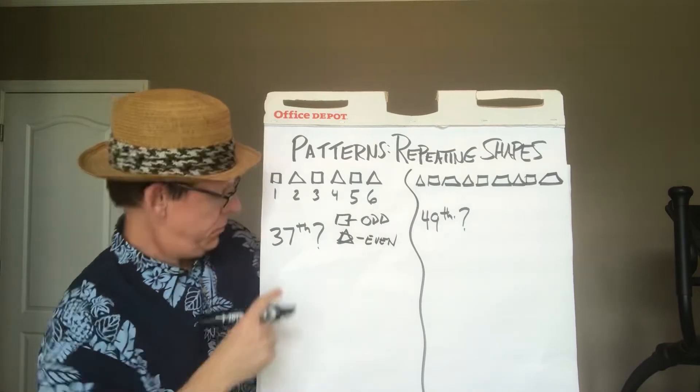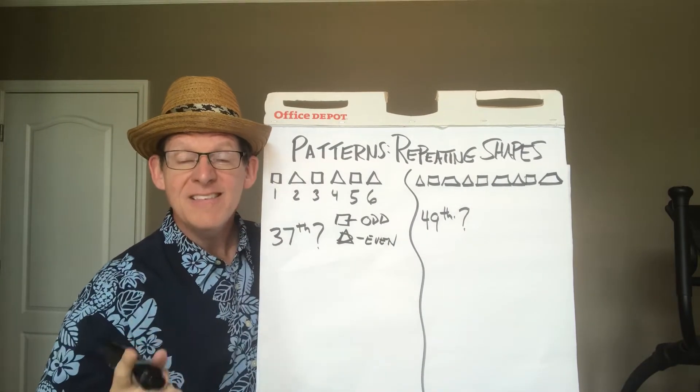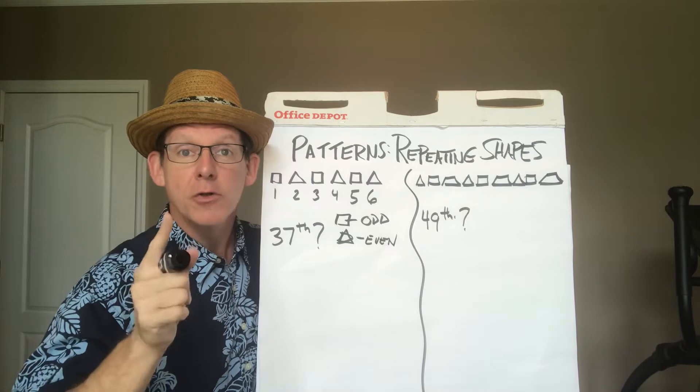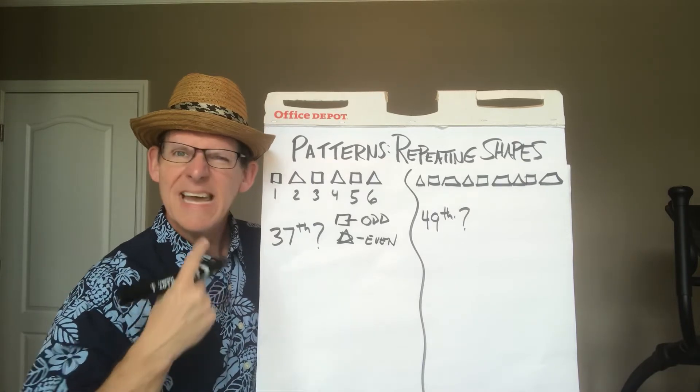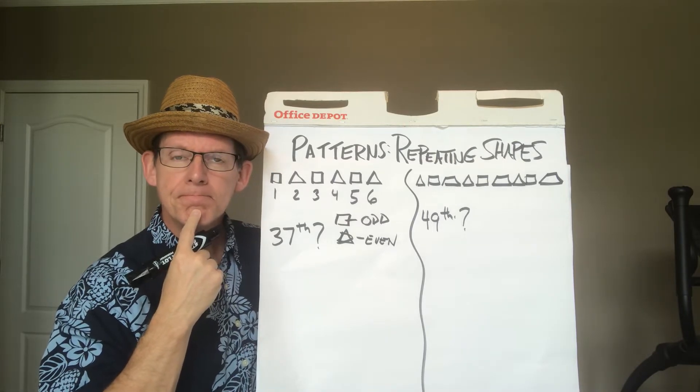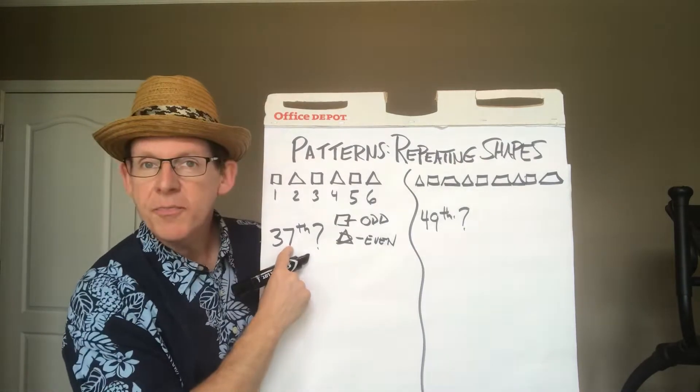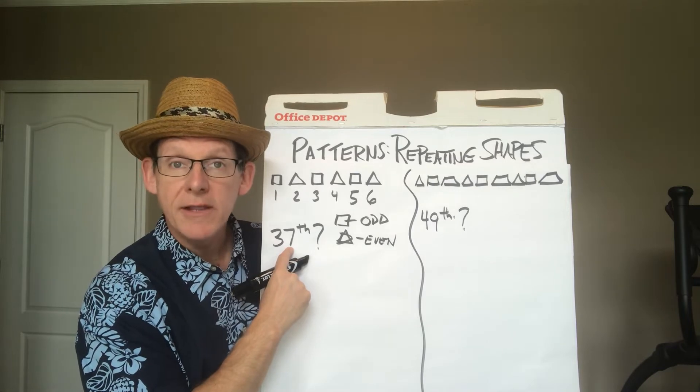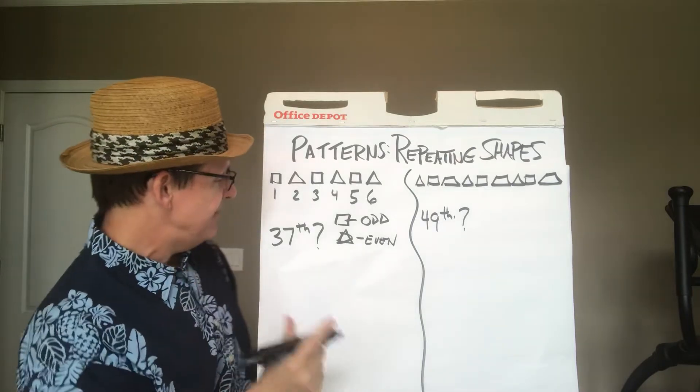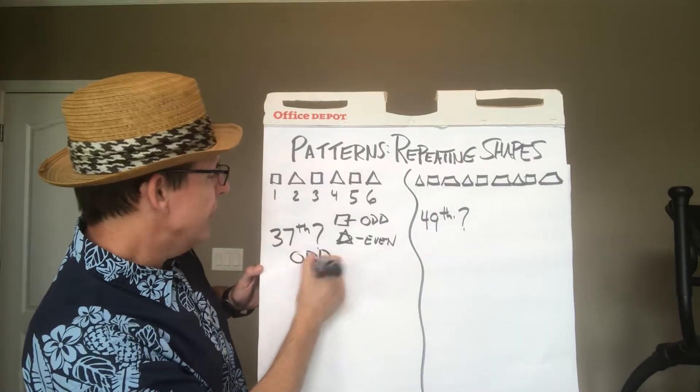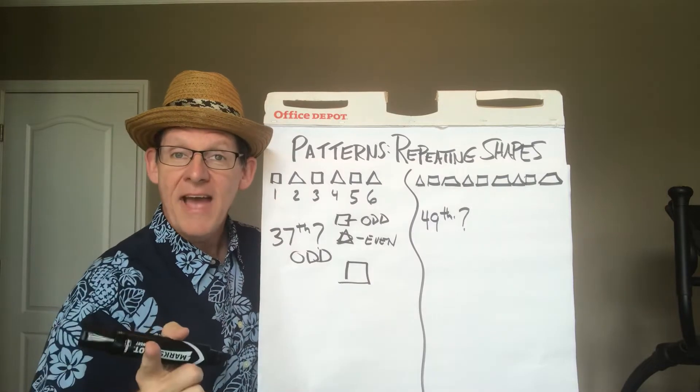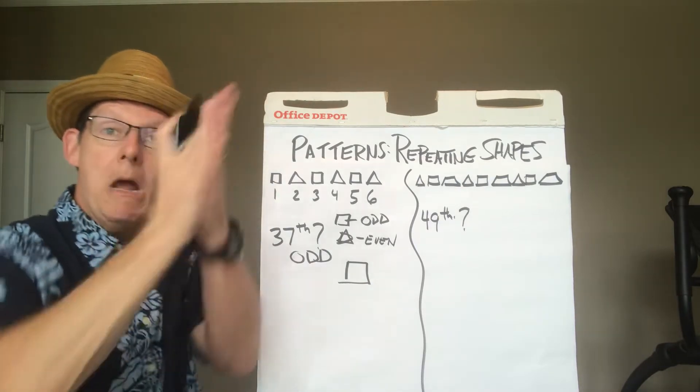So now I have to ask the question, what's 37? Is 37 odd or even? Because if I can figure that out, then I will know what shape goes there. How am I going to figure out if 37 is odd or even? That's right. I look at the ones place. 7. Is 7 odd or even? That's right! It's odd. So that means that 37 has to be odd. So that means it is a square. If you got that, give yourself a pat on the back and a round double pause.